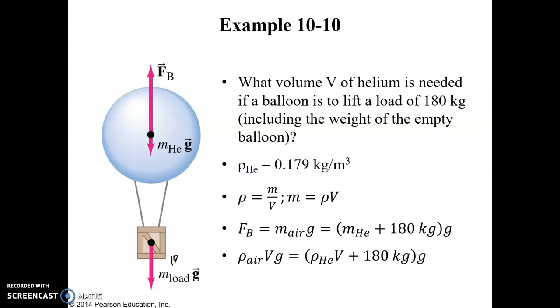So, this is 180 kilograms down here. Now, keep in mind, the helium itself does have a weight. If we look this up in the textbook, the density of helium is 0.179 kilograms per cubic meter. So, if we wanted to know the mass, density is mass divided by volume. Therefore, mass is equal to density times volume.